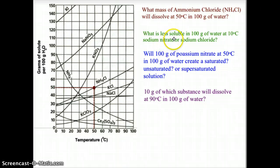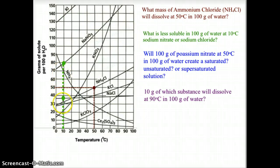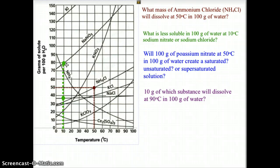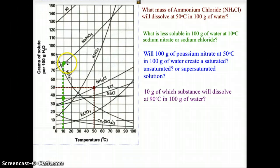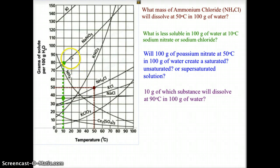The second question asks: what is less soluble in 100 grams of water at 10 degrees Celsius — sodium nitrate or sodium chloride? We go to the 10 degrees Celsius line and run it upward. The NaCl line gives about 37–38 grams of solute, while NaNO3 gives about 80 grams. So sodium nitrate is more soluble, and sodium chloride is less soluble — making sodium chloride the answer.